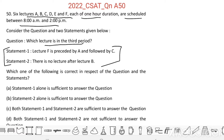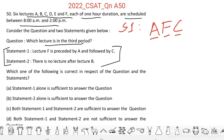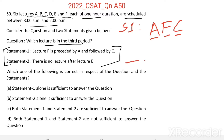Let us see the first statement: Lecture F is preceded by A and followed by C. So based on the first statement, we can only say that A, F, C lectures are together.